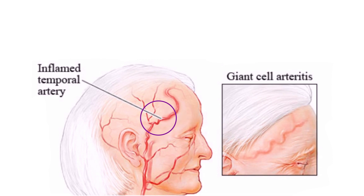Inflammation can also involve the carotid system. Eventually, this inflammation can lead to thickening and narrowing and eventually occlusion of the lumen, which can lead to ischemia. We'll talk about that a little bit later. I just wanted to show you that picture to illustrate what exactly is going on.